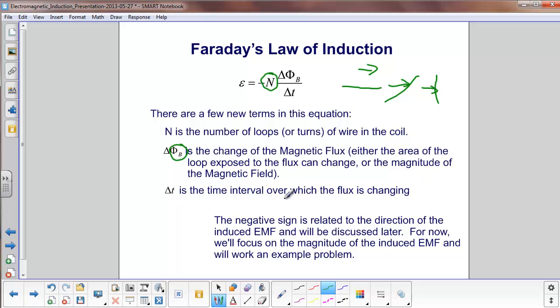Delta T, of course, is just the time interval over which the flux is changing. And the negative sign, don't worry about it so much now. We'll get to that later. But that's telling you what direction the induced EMF will be. But for now, we're just going to worry about the magnitude of the EMF, and we'll work an example problem.